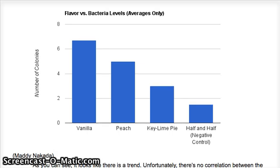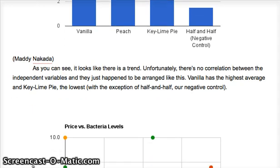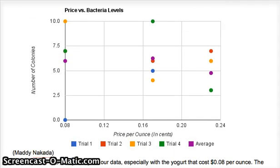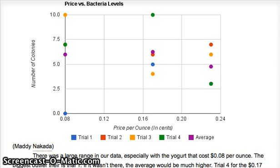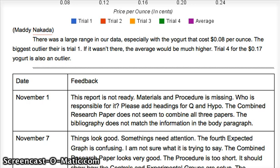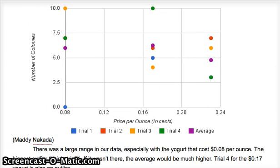That was actually the exact opposite of our hypothesis. For price versus bacteria level, our graph is a little crazy — we had tons of outliers and it does not match our hypothesis at all. In conclusion, we think that most yogurts are created equally, at least the ones that we tested, though it does match our hypothesis a little bit.